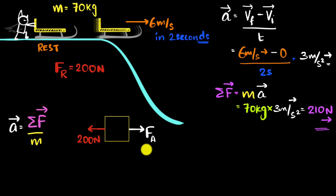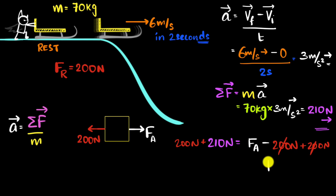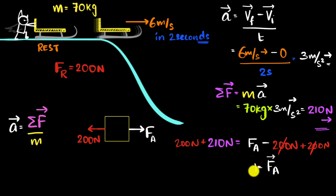Now that I know the net force, I can calculate the applied force. The applied force must be bigger than friction since the total force should be to the right. So: net force equals applied force minus 200 Newtons. That gives 210 equals applied force minus 200. Adding 200 to both sides, the applied force equals 210 plus 200, which is 410 Newtons to the right. That's how much force we need to apply for all of this to happen.